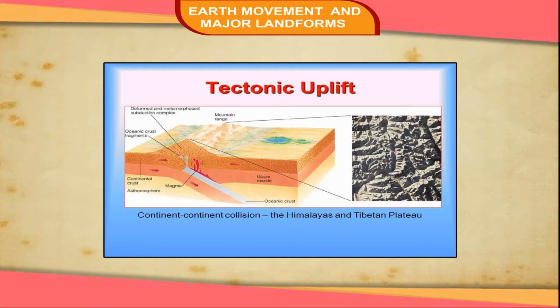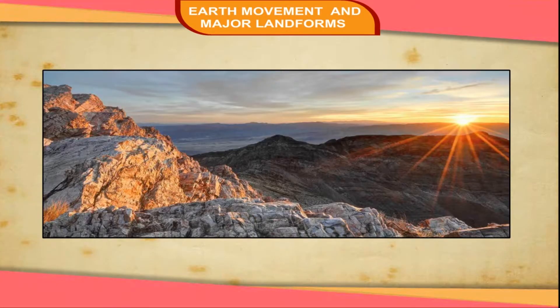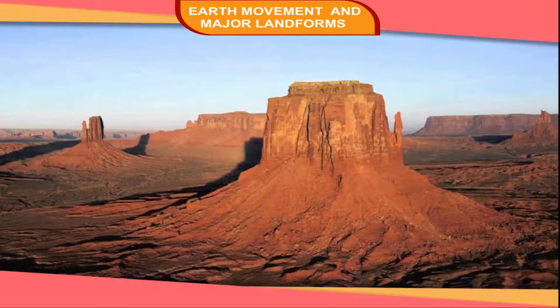The vertical movements cause uplift or subsidence of the Earth's crust. When a part of the Earth's crust is thrown up by an internal force, it results in an uplift. The uplifted portion may become a plateau or a continent. In case of subsidence, a part of the Earth's crust may sink in comparison to the surrounding region and might give birth to a valley.